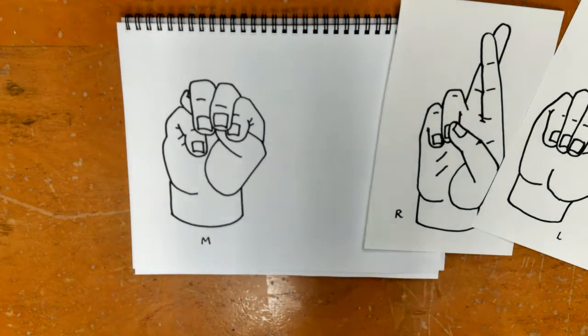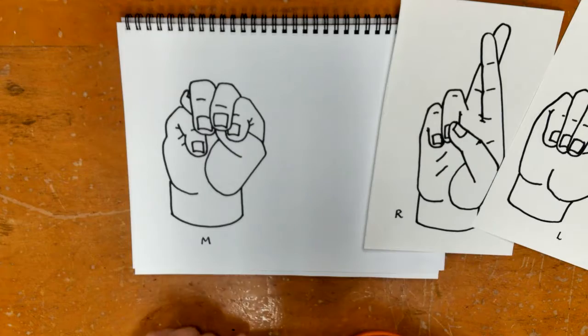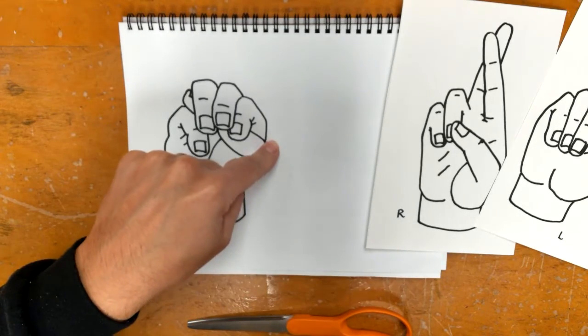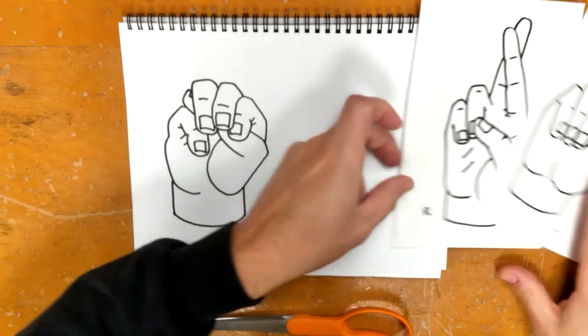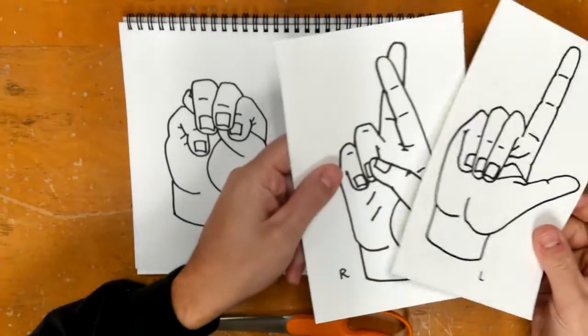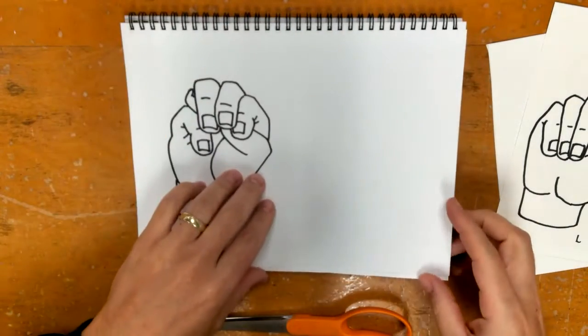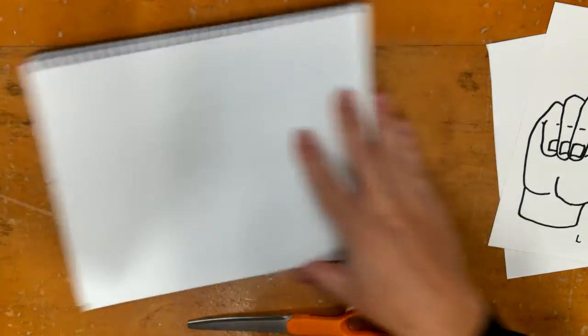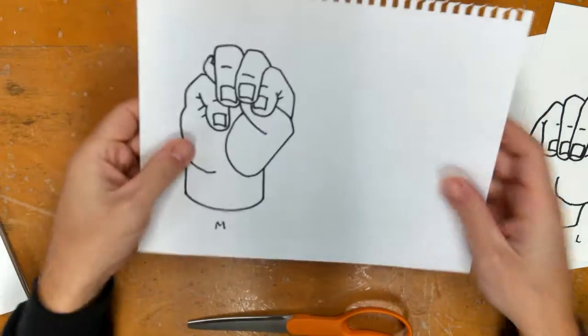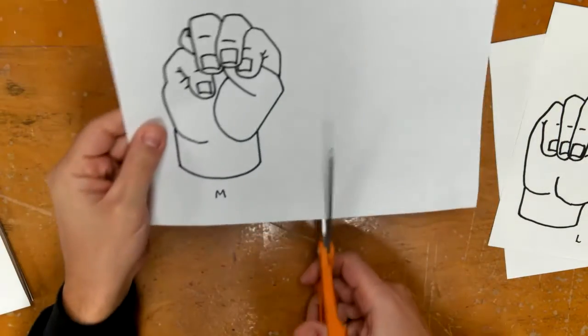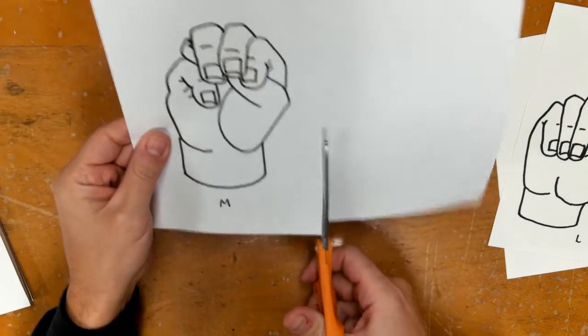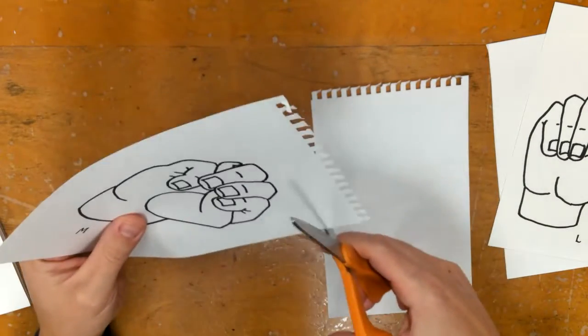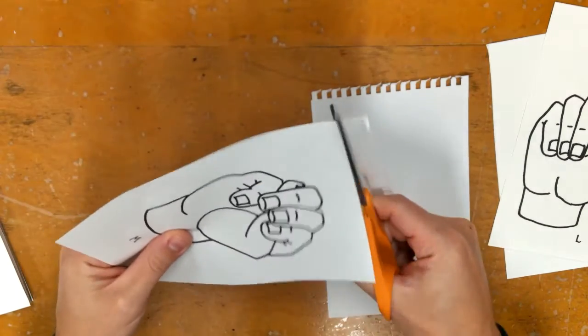Hi fifth graders, today we are going to cut out the hands that we have traced into our art book. I've already kind of cut these out of the art book. All I want you to do is carefully tear, okay, and then separate them.